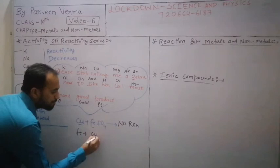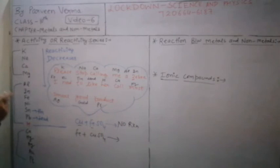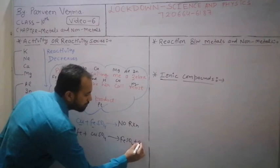Reverse case: if we add Fe to copper sulphate solution. Look, now iron is above, copper is below, so iron is more reactive. So iron will replace copper, will form FeSO4 plus will displace copper. So here displacement reaction will occur. I hope you understand this question.